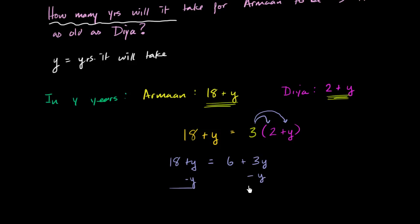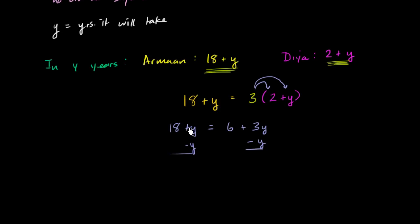And we are left with, on the left-hand side, 18. And on the right-hand side, you have six plus three y's. Take away one of those y's, you're going to be left with two y's.